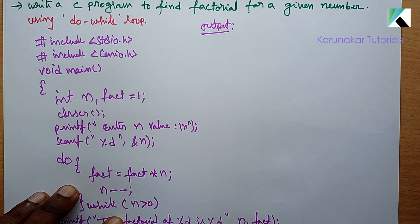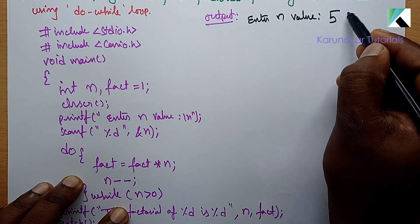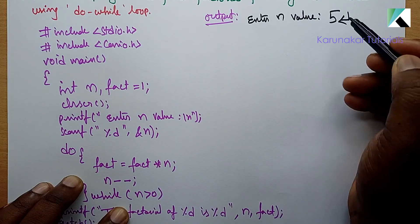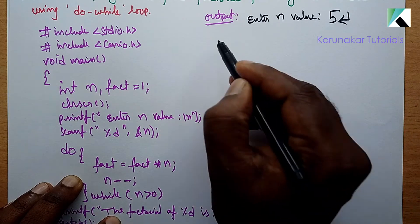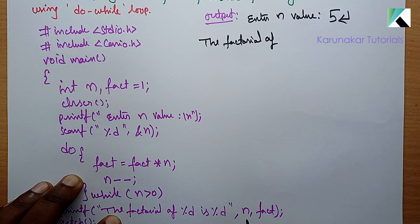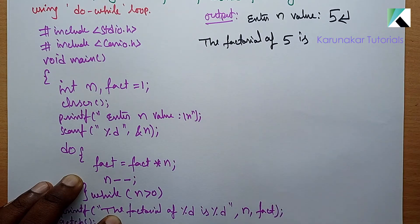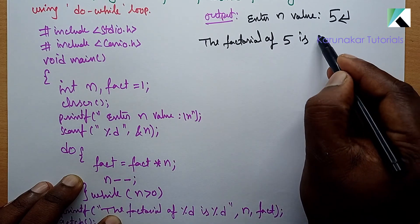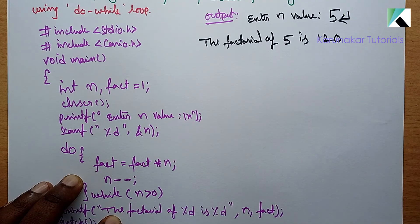So what will the output be? First, enter n value. Enter 5. The printf statement: factorial of percentage d — place of n, n is 5. The result percentage d is fact. Fact has the final result: 120. This is the output. The factorial of 5 is 120.